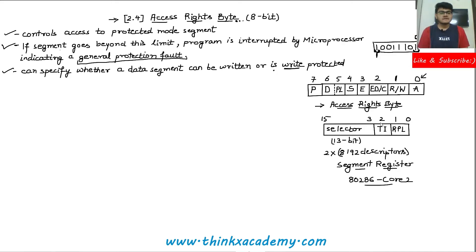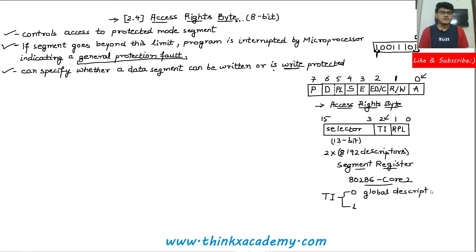In the second bit of the segment register, we have TI. If the value of TI is 0, it means we are going to use the global descriptor table. If TI is 1, then the microprocessor is going to use the local descriptor table. We already know that these tables are basically used to select the selectors.